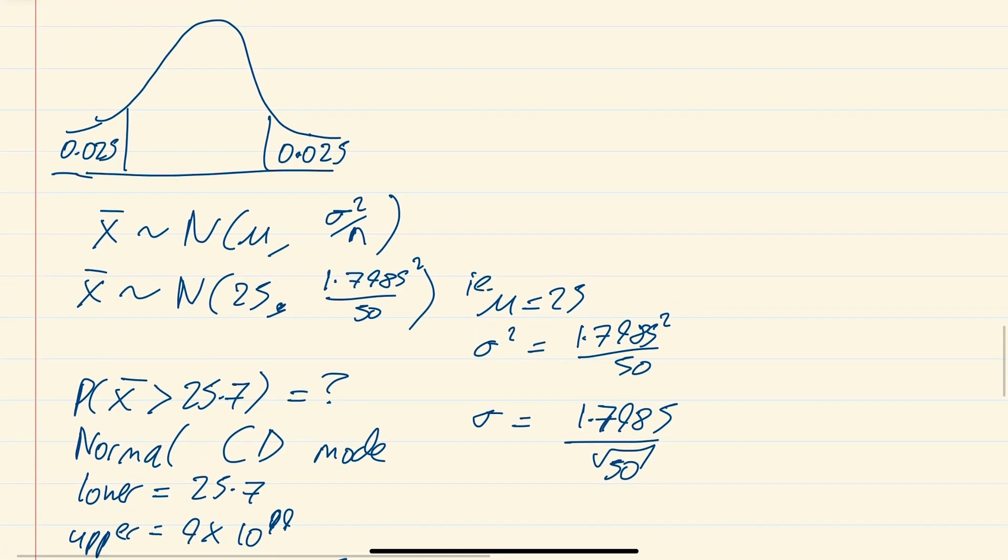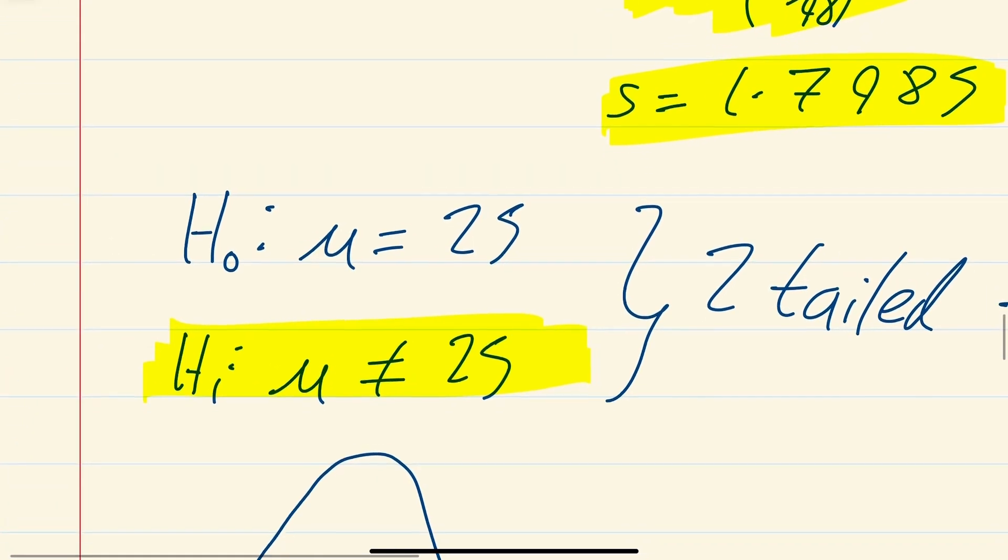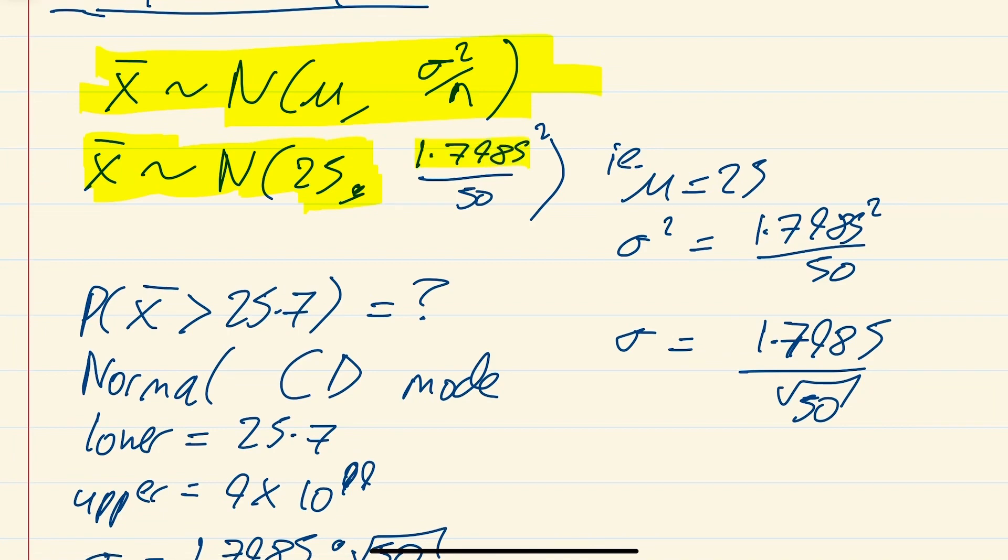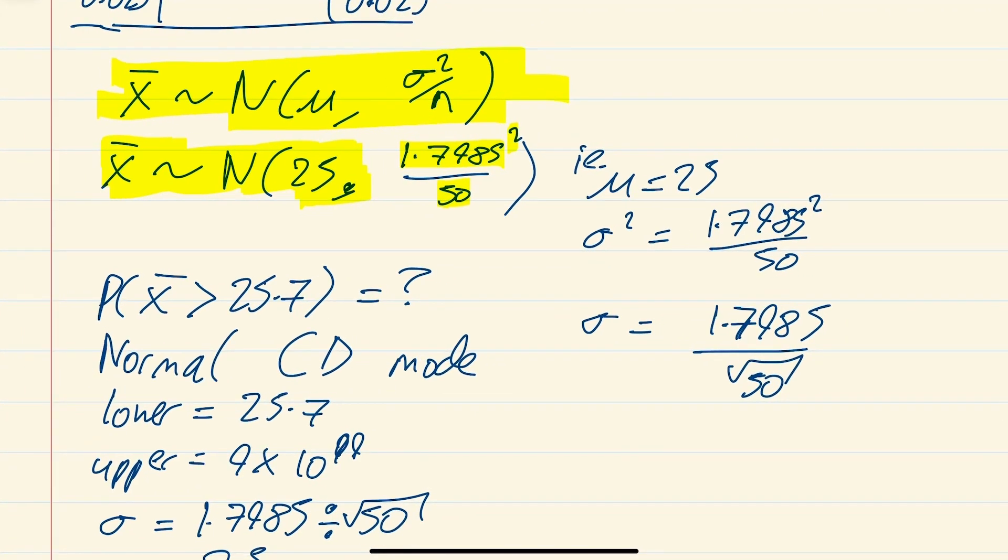Your set of your means also form a normal distribution. So X bar is distributed with a normal distribution, mean mu, and its variance, instead of being sigma squared, is sigma squared over n. So X bar is distributed with mean of 25, because you're assuming that's what you're assuming to be true, that was your H0. And your sigma we worked out to be 1.7985, that gets squared, and then that's over 50. So your mean is 25, your sigma squared is this. If sigma squared equals that, sigma equals the square root of the top line, which is just 1.7985 without the square, and then the square root of the bottom line, which is root 50.